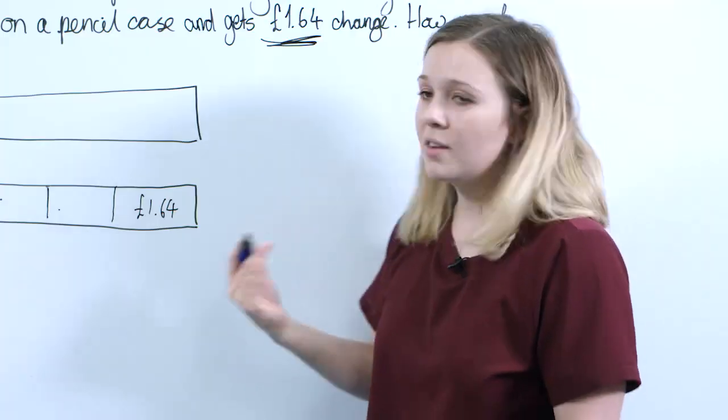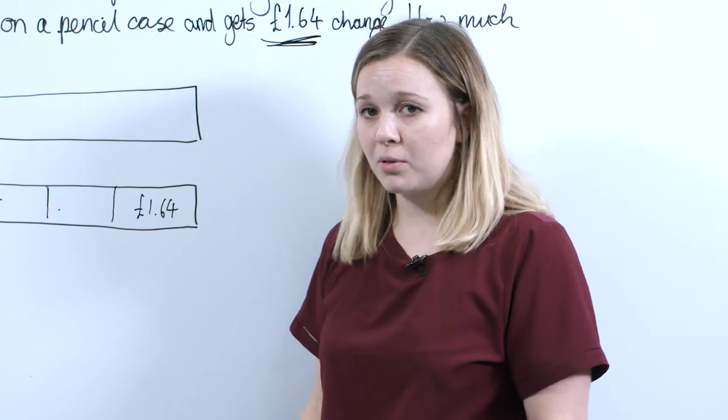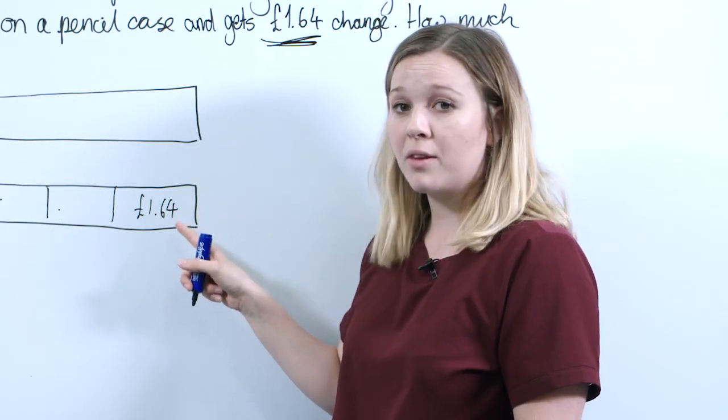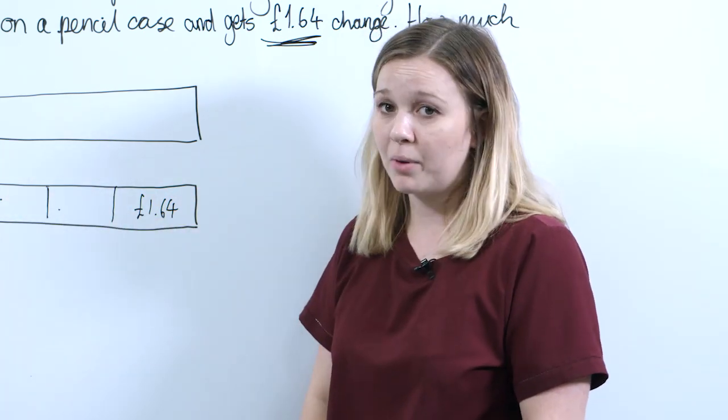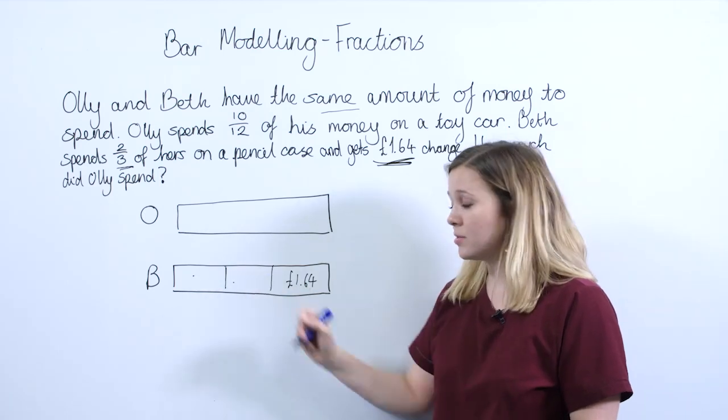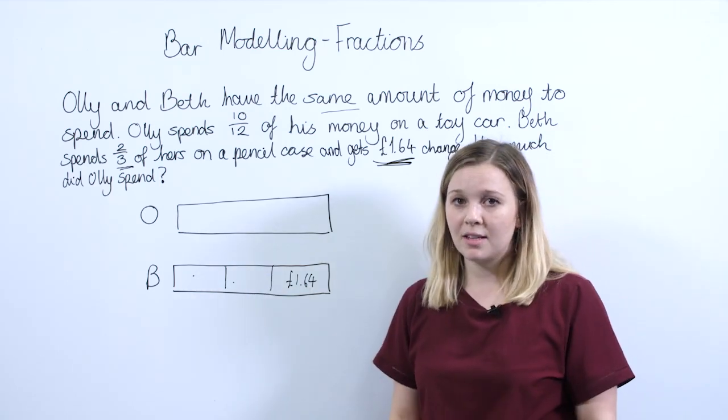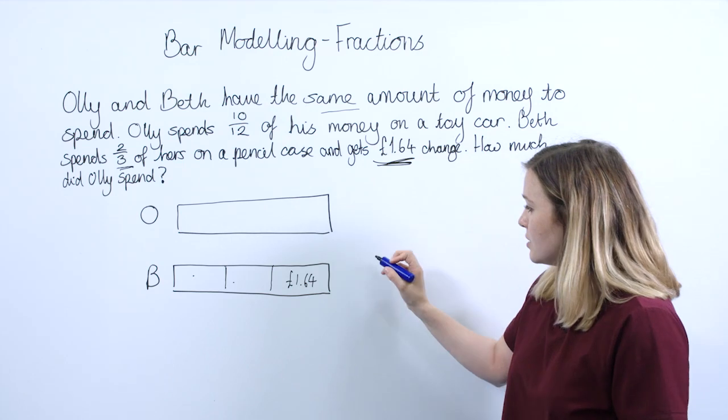The next question that you would want to ask your pupils is, if I know that that's 1/3 - that's her change - how can I find out the whole amount that she had to begin with? And hopefully they should see easily from the bar model they just need to multiply £1.64 by 3.